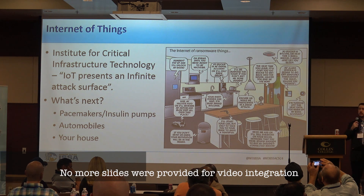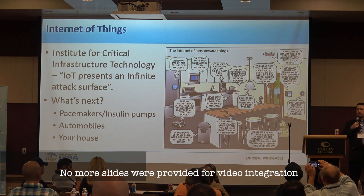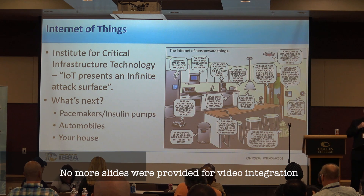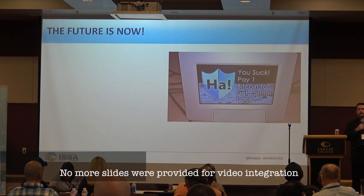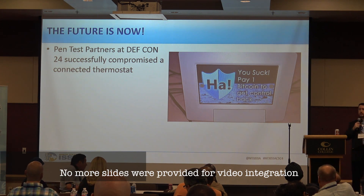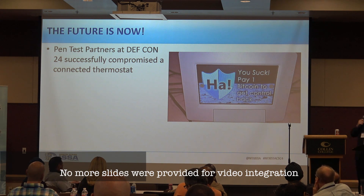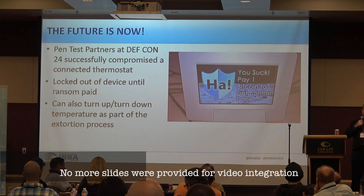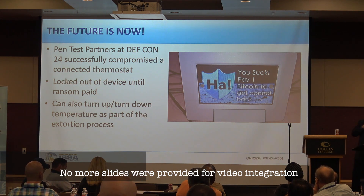Pacemakers and insulin pumps have already been proven vulnerable to ransomware. Automobiles have been driven off the road — we saw that at DEF CON last year. In your house, there's a great comic showing all the different things that could be ransomed. The future is now — at DEF CON 24 in 2016, researchers provided a proof of concept of a thermostat being locked out, able to lock until Bitcoin was paid and turn the temperature up and down at will. They could freeze you out of your house or turn up the heat. We're going to be seeing more of this.